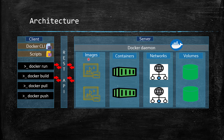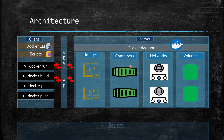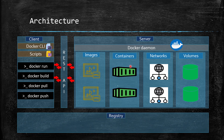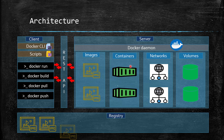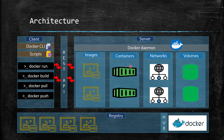Before moving on to images and containers, there is another concept called the registry. The registry is like a repository for Docker images — it holds multiple images. By default when you install Docker, it connects to the public repository called Docker Hub. But you can also configure your own private repository separately.